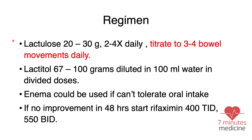To lower ammonia levels, the first agent is lactulose 20 to 30 grams two to four times a day, titrated to three to four bowel movements per day — this is how you dose lactulose. Second, you can use lactitol 67 to 100 grams diluted in 100 ml of water in divided doses throughout the day. If the patient cannot take oral medications, an enema may be used, and patients in the ICU may receive medications via nasogastric tube.